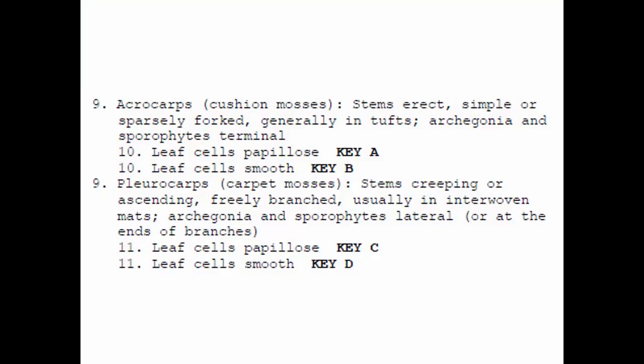Those are some examples of what I like to call weird mosses, including two that we've learned: atrichum and fissidens. The rest of the key is long and detailed, but basically divisible into four sections having to do with whether the growth form is an upright acrocarp or a flat, sprawling pleurocarp, and furthermore whether the leaves are bumpy — papillose — or smooth. Two times two gives us four different combinations.